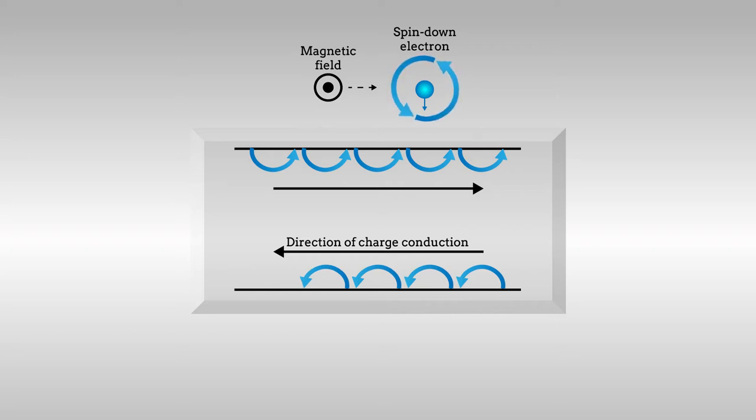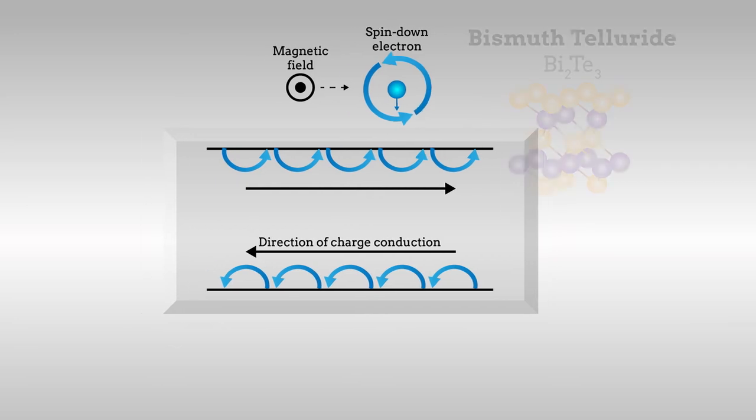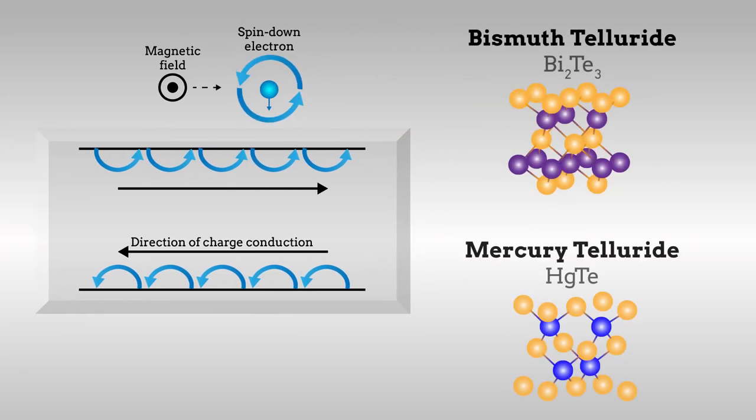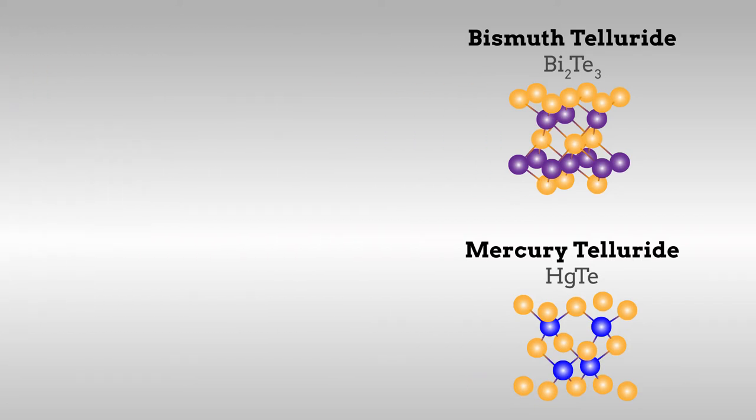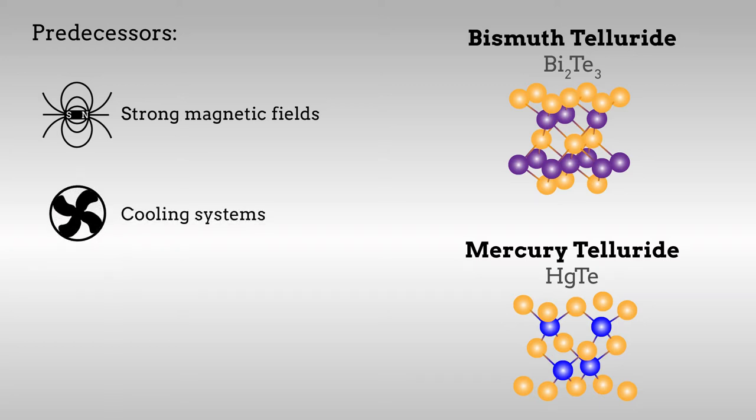The discovery of materials that can behave as topological insulators, such as bismuth telluride and mercury telluride, has greatly simplified how this peculiar charge conduction scheme can be studied. Unlike their predecessors, which often required strong magnetic fields, specially designed cooling systems, and powerful light sources to be tested, these materials are easy to handle and can be probed at room temperature.